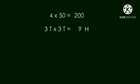3T into 3T. So we will first multiply 3 into 3, that is 9, and T into T is H. So the answer is 9H, which means 900.